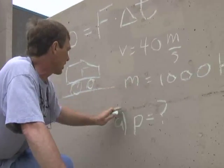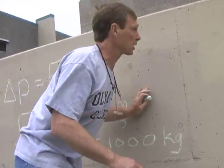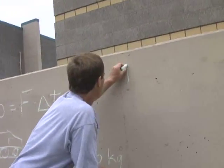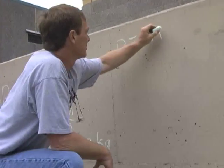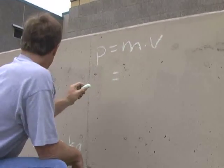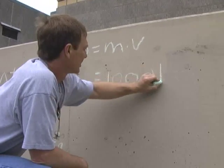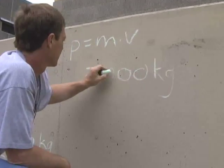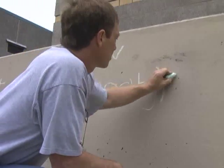Let's see. I've got mass and velocity. I've got everything I need. So if we put together a work equation, the momentum is the mass times the velocity, which is 1,000 kilograms times 40 meters per second.